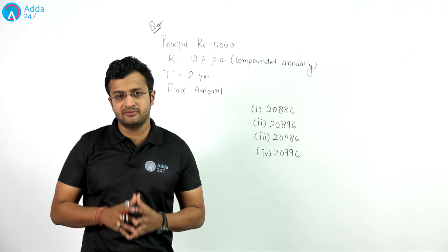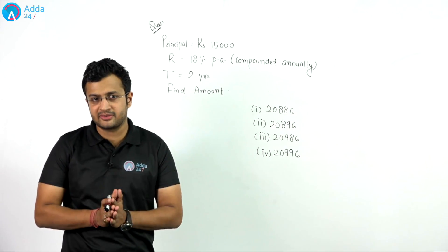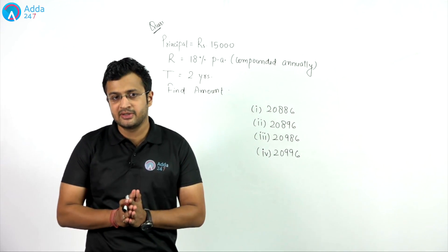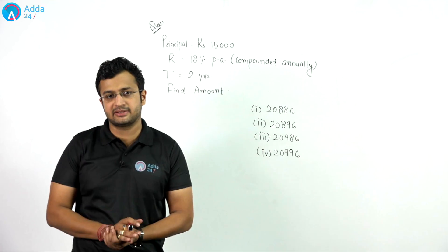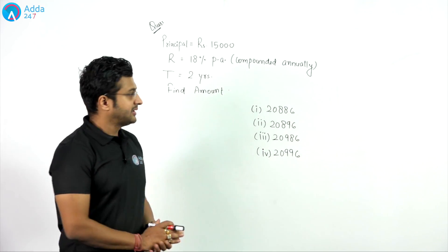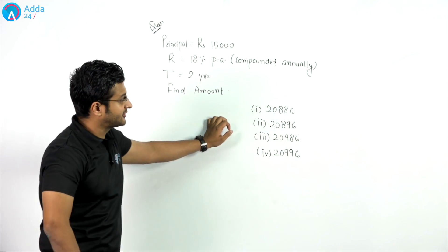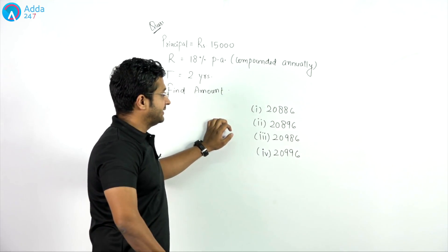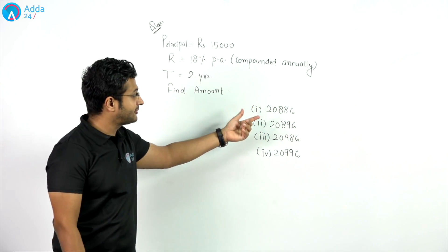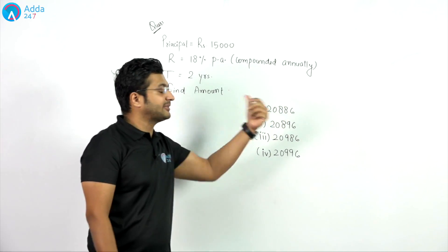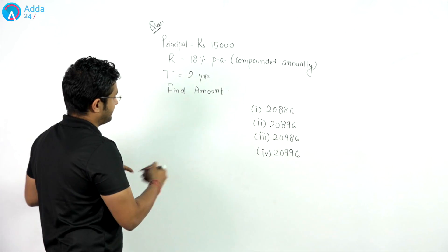Hello friends. In this session we will discuss how to solve compound interest questions without using pen, by using the digital sum method. In the digital sum method, we do the sum of digits of a number until we get a single digit.